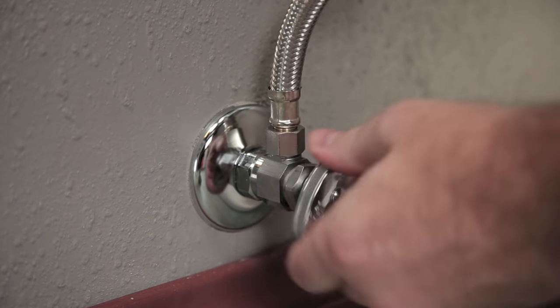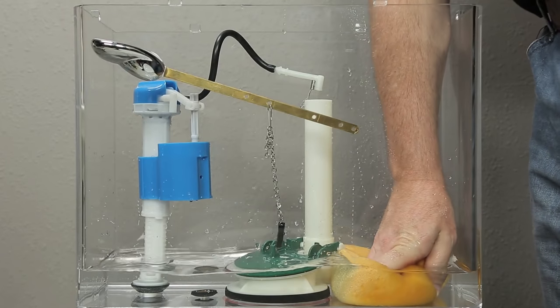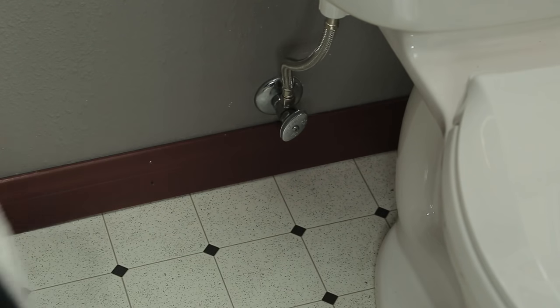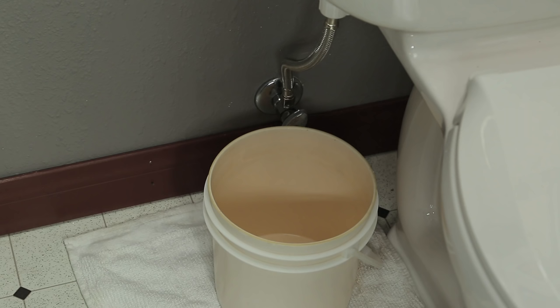Turn off the water supply at the shut-off valve below the tank. Flush the toilet. Using a sponge, soak up the remaining water in the tank. Place a towel or receptacle on the floor beneath the fill valve to catch any residual water left in the lines.